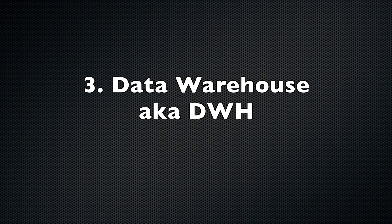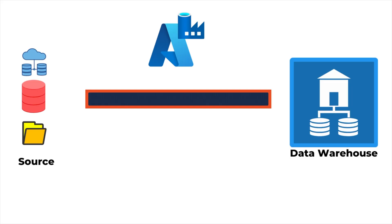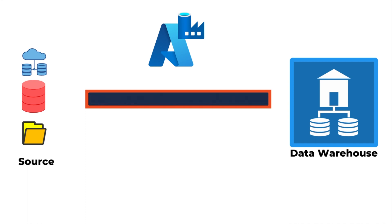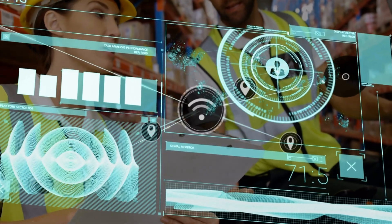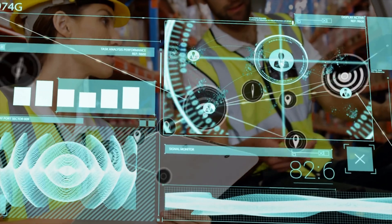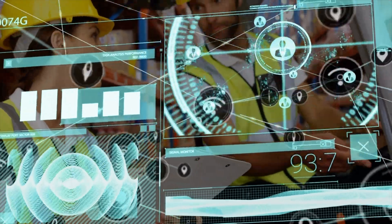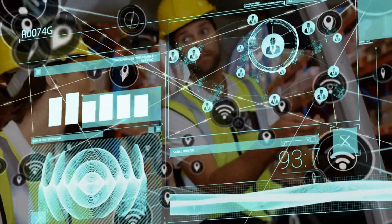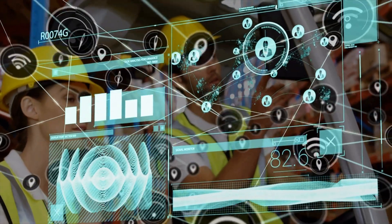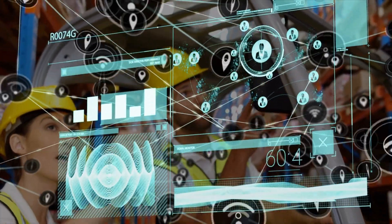Now, let's talk about the third point: data warehousing. ADF can be used to move data from various data sources into a data warehouse. This is a common use case for businesses that need to centralize their data for analysis. By using ADF to load data into a data warehouse, businesses can simplify their data management process and make it easier to analyze the data.